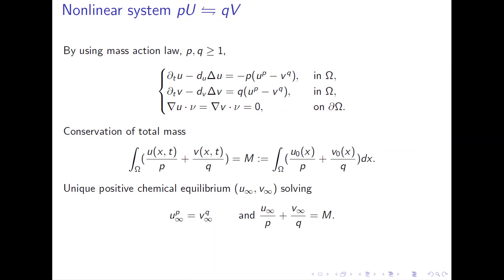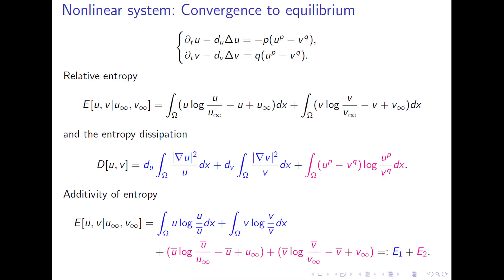Now let's move on to the nonlinear system, because the linear analysis is straightforward. We consider a more general reversible reaction: P molecules of U reacting with Q molecules of V. You can write down the system with linear diffusion, but the reaction is nonlinear via the mass action law in chemistry. You still have conservation of total mass with different weights. You also have a unique chemical equilibrium—not explicit anymore, but that doesn't matter.